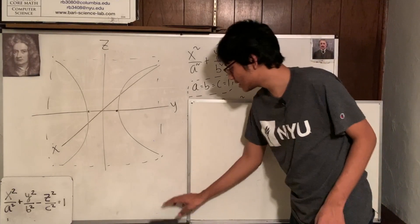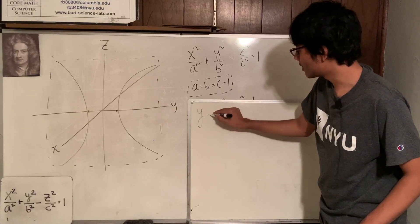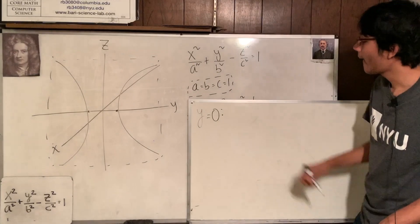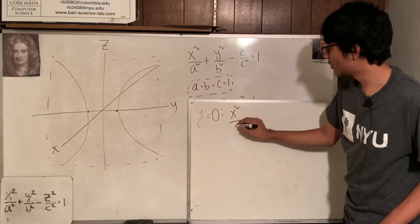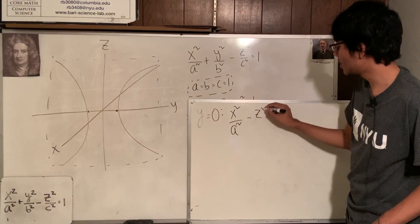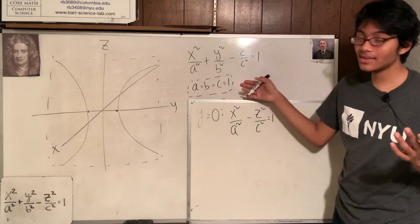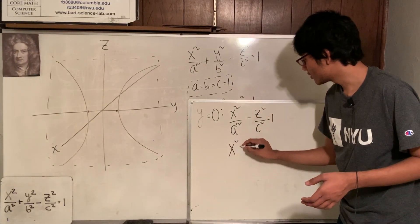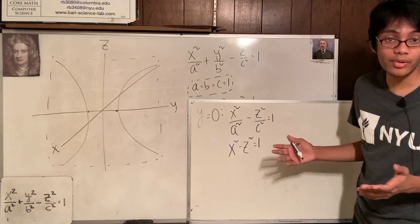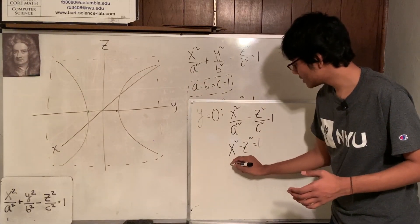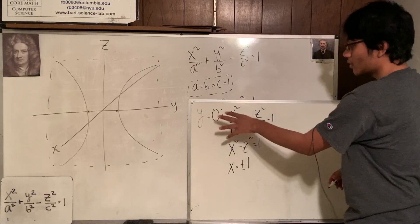I'm going to fix y now. So I fixed y, and what do I get? I set y to be zero — pop it out — and what we get is x squared over a squared minus z squared over c squared equals 1. Now, I said to make our conversation simple, I'm letting a, b, c be 1. So x squared minus z squared equals 1 — and huzzah! You've got another hyperbola. What type of hyperbola is this? Same answer: if you find the x-intercepts, you'll find that x can either be plus or minus 1. If you're fixing y, you're looking at the XZ plane.